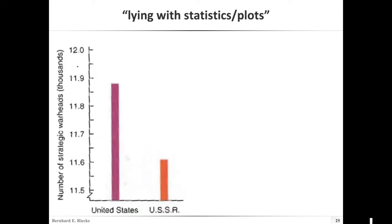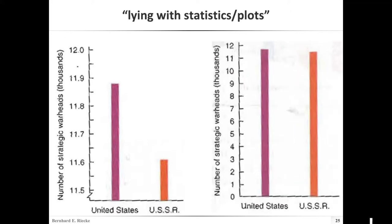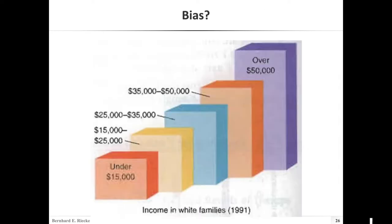There are whole books on how to lie with statistics. For example, here's the number of strategic warheads — a fairly old plot. The left plot suggests the United States is a lot higher, but if you have the full scale it pretty much looks the same. There are lots of ways you can bias data by basically arranging it.